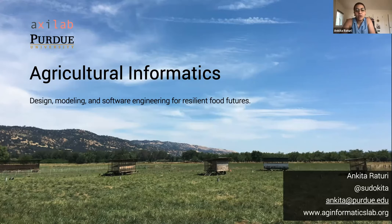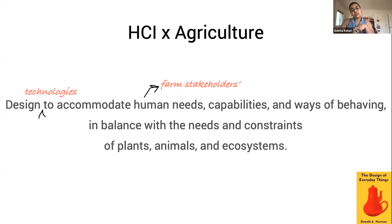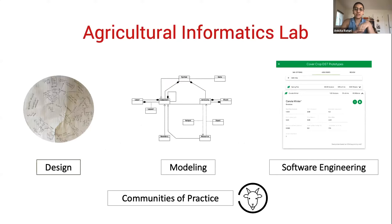When we think about HCI and agriculture and what the intersection of the two looks like, what we're really trying to do is design technologies to accommodate farm stakeholder needs, capabilities, and different ways of behaving — thinking about this in balance with the needs and constraints of plants, animals, and ecosystems. So we're doing the design of everyday farm things, everyday ag things, everyday food things, and that's really where my heart sits.